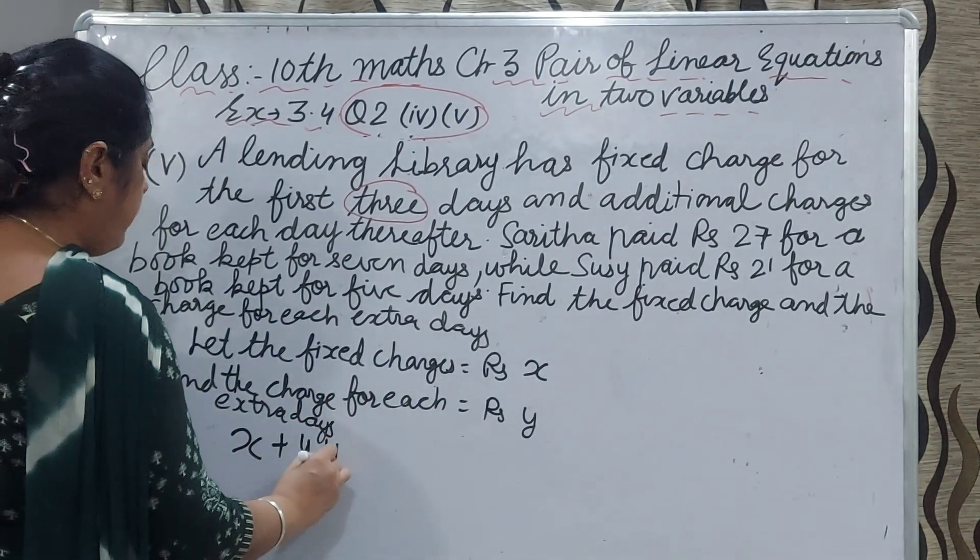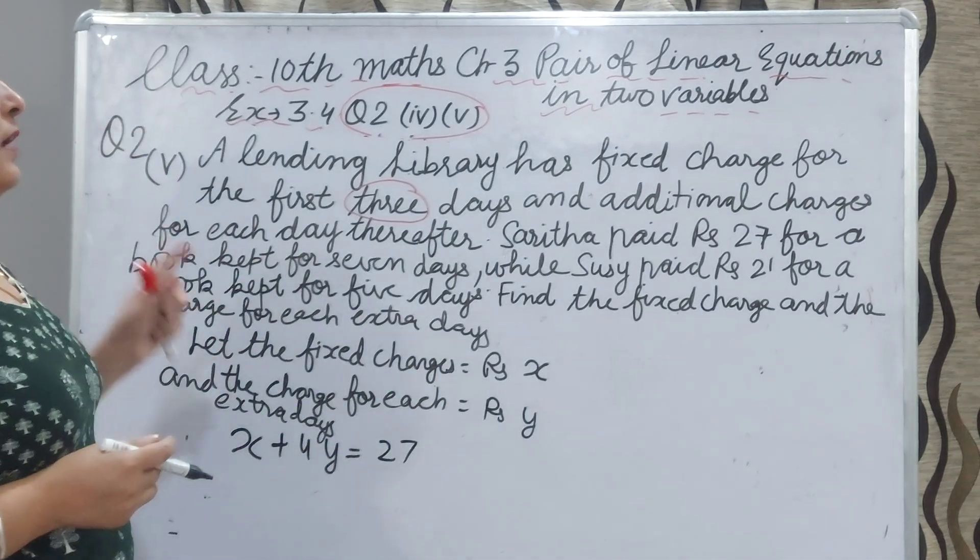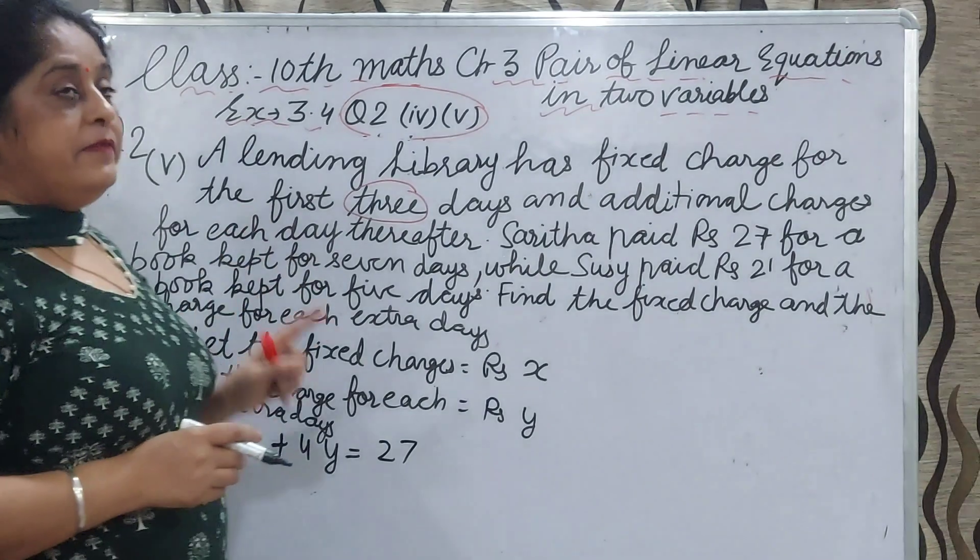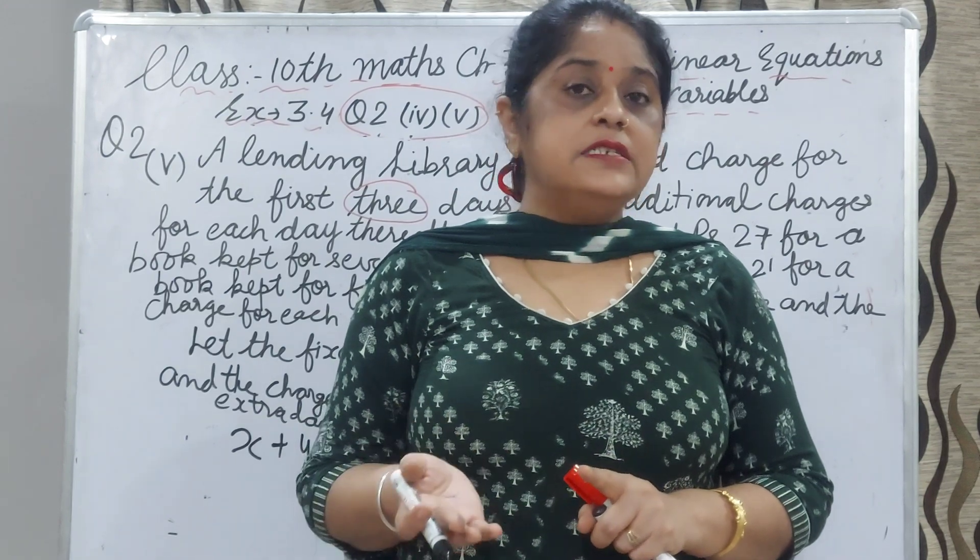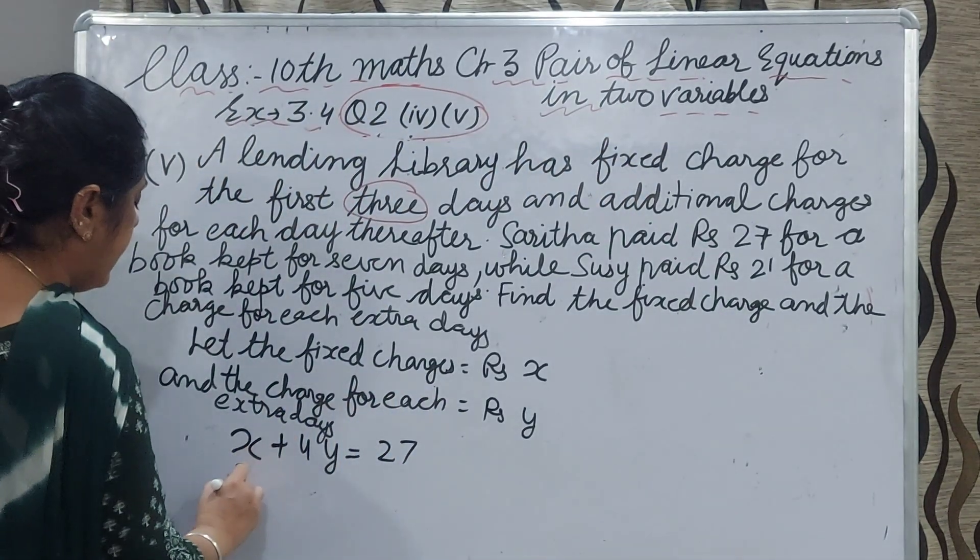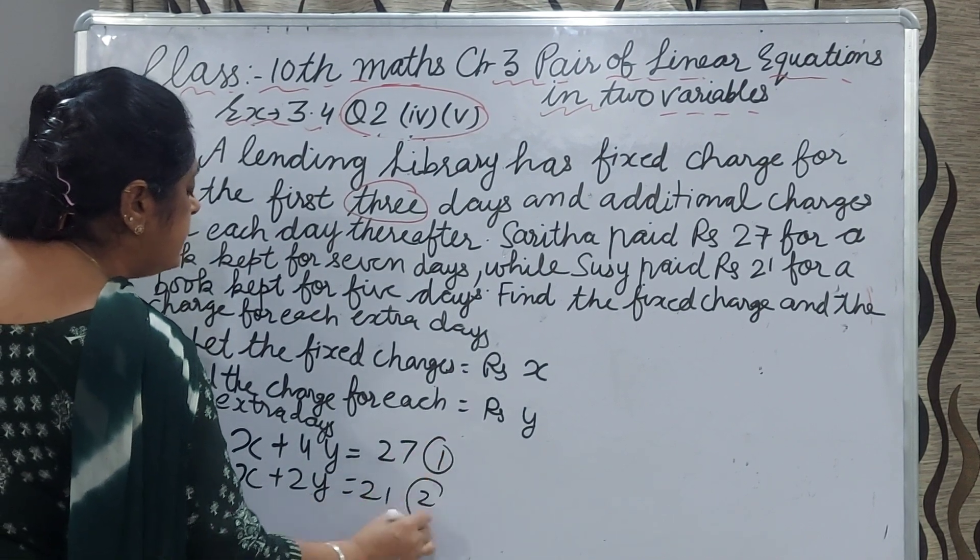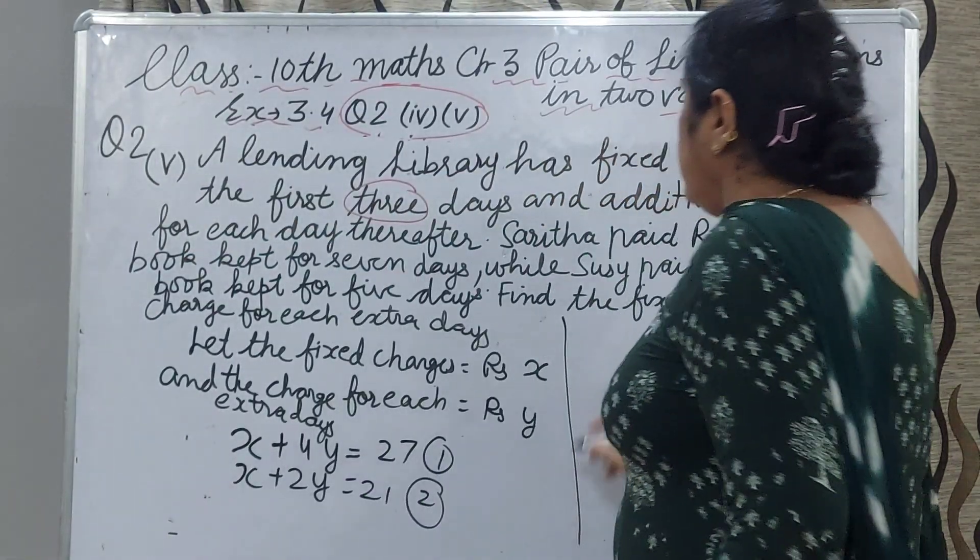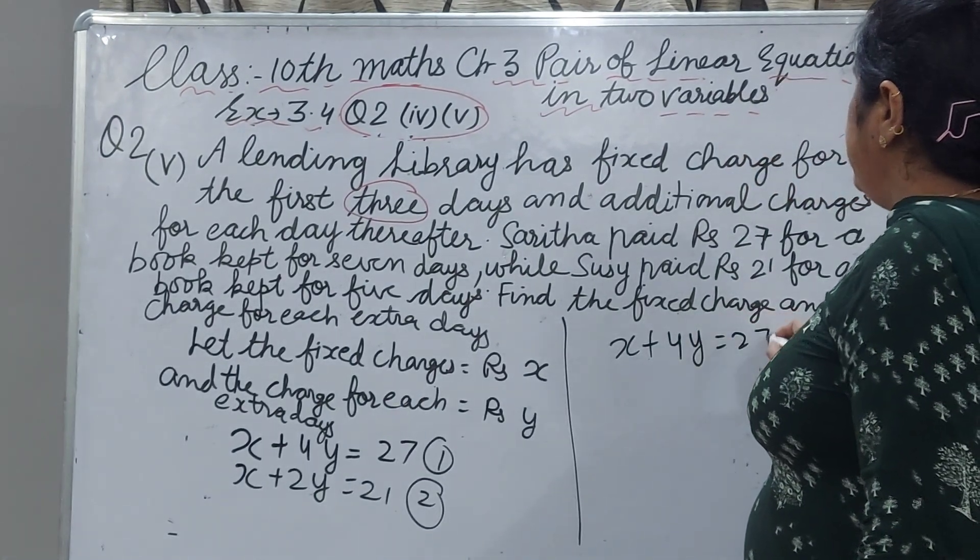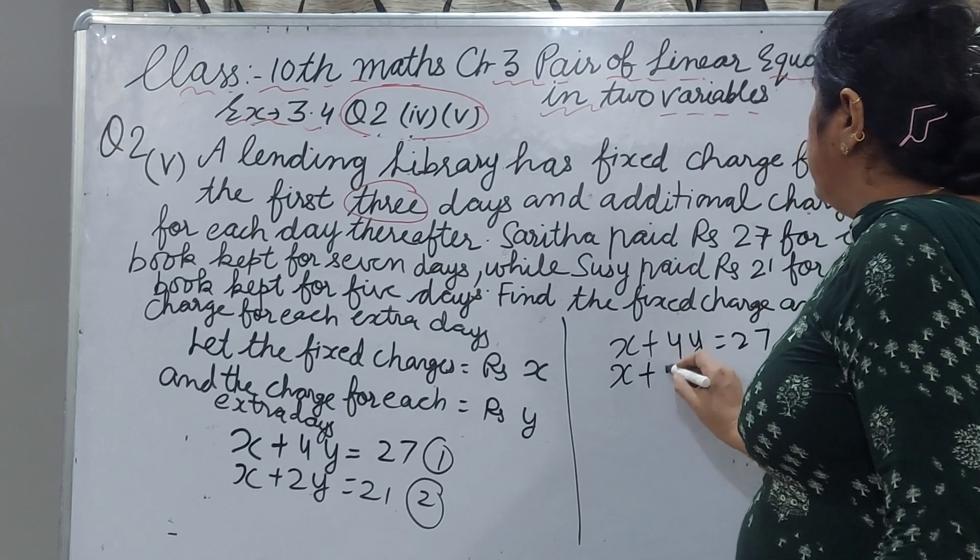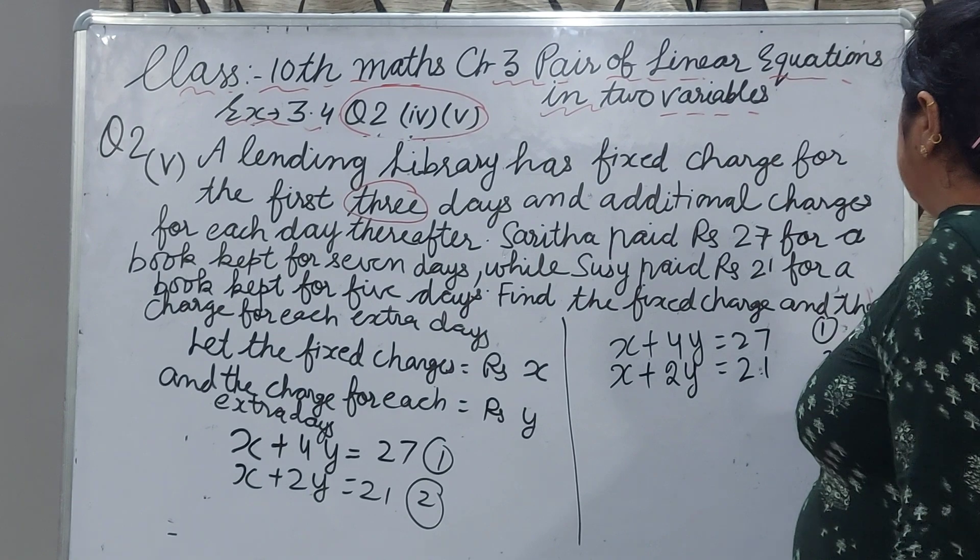And Sushil paid 21 rupees for 5 days. In 5 days, 3 day charge is fixed and 5 minus 3, extra charges for 2 days. x plus 2y is equal to 21. That is equation 1 and that is equation 2. x plus 4y is equal to 27 and x plus 2y is equal to 21. This is equation 1 and this is equation 2.